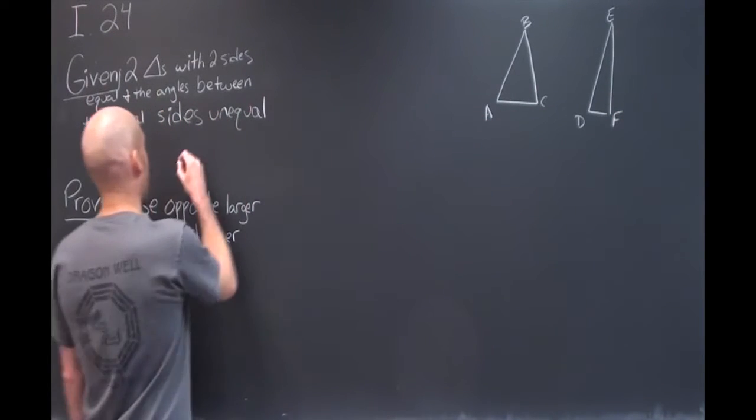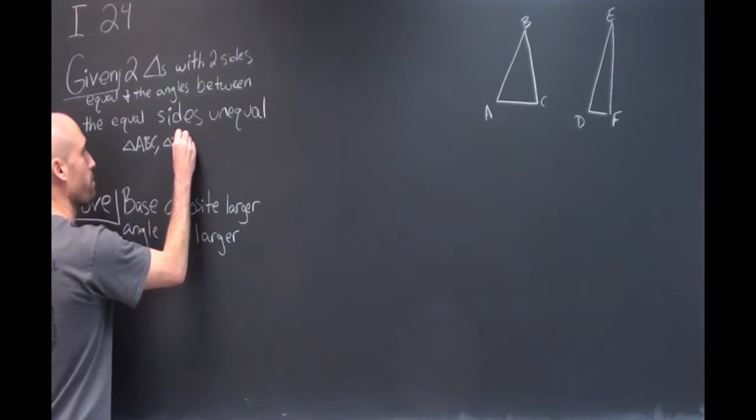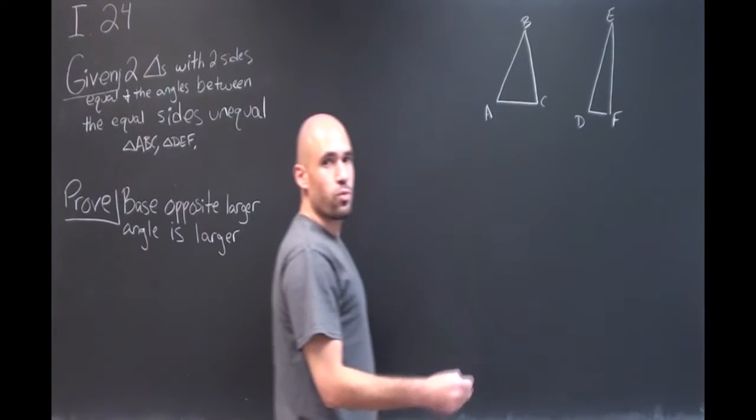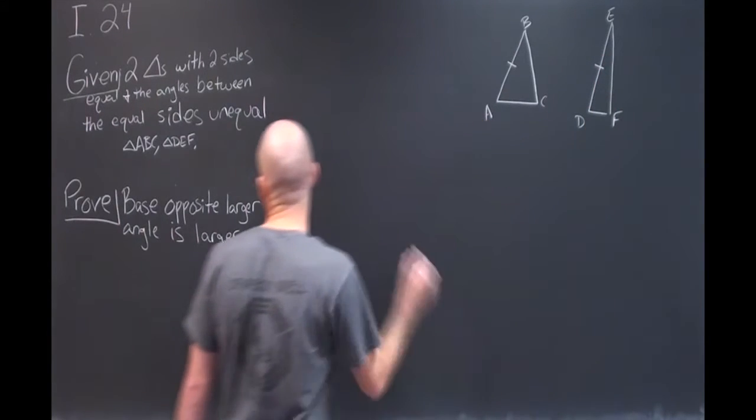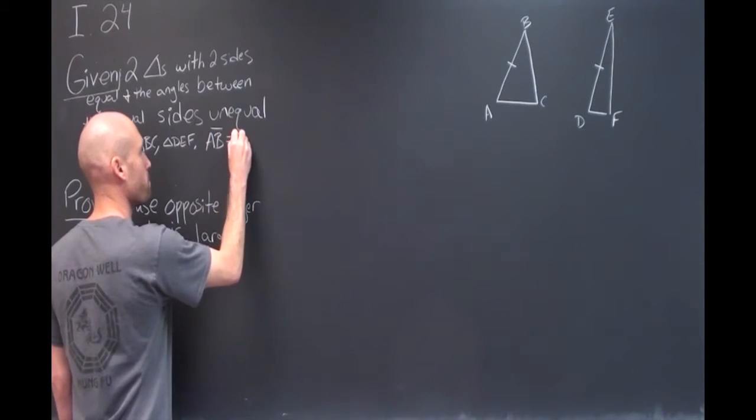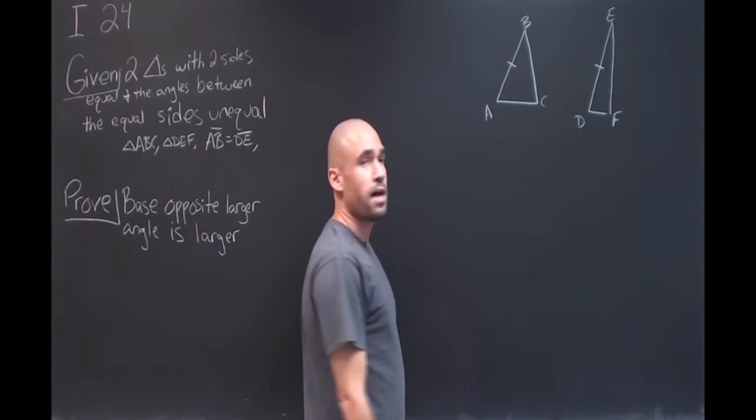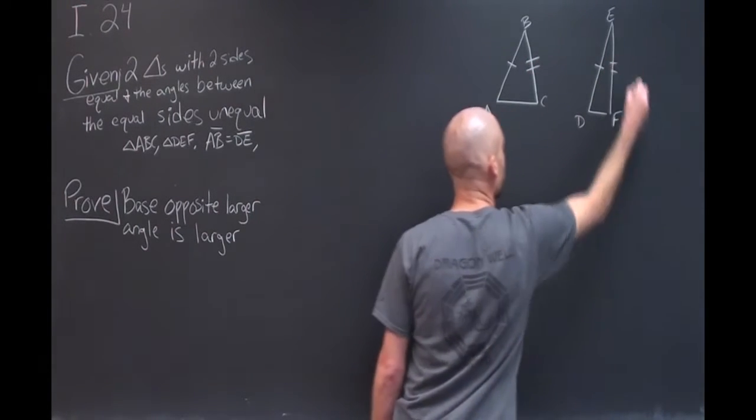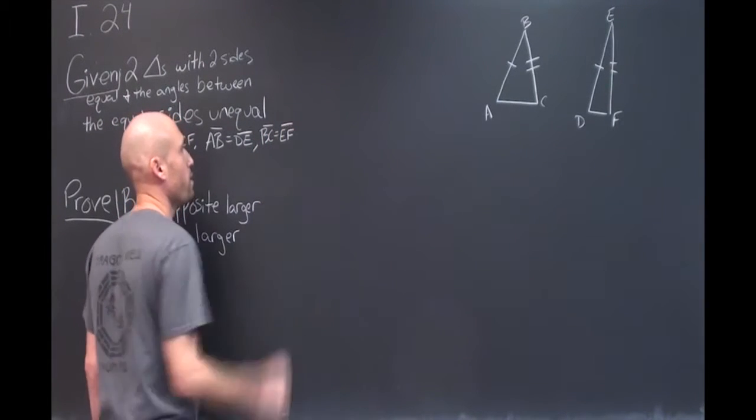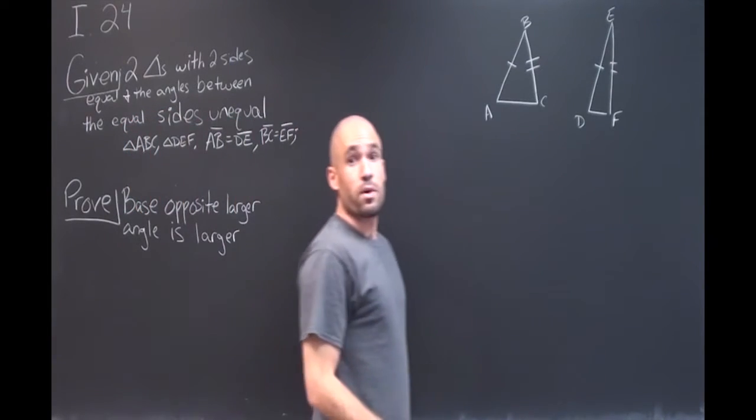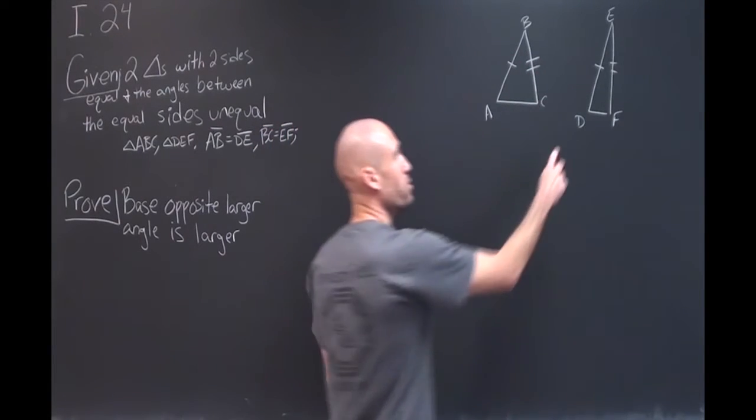We're given two triangles ABC and DEF and we also know that side AB is equal to side DE and that side BC is equal to side EF. We also set it up such that angle ABC is greater than angle DEF.